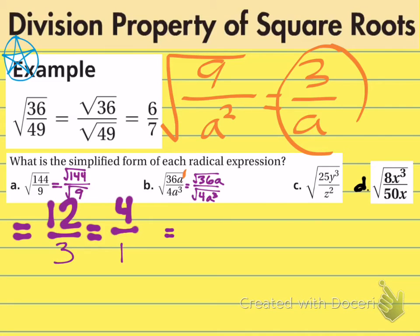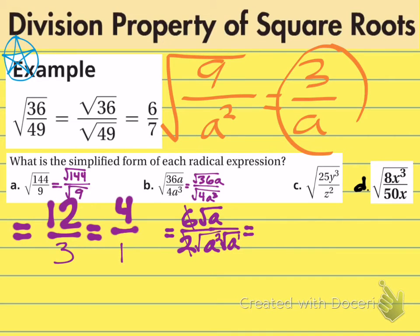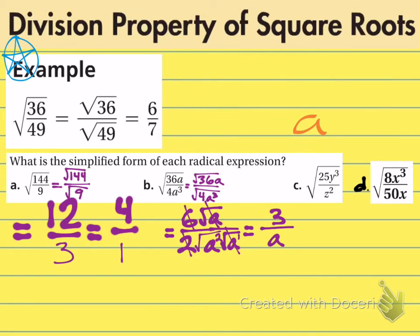Looking at the longer way: if you did not simplify first, your 36 would become 6 and the a stays under the radical. Your 4 would become 2. The a³ gets rewritten as a² times a¹ under radical signs. 2 can go into 6 three times, and the radical a in the numerator and radical a in the denominator cancel. The radical a² in the denominator square roots to give a. You get the exact same answer. I highly recommend: if you have a fraction, simplify it before doing all this work — you save a lot of time.